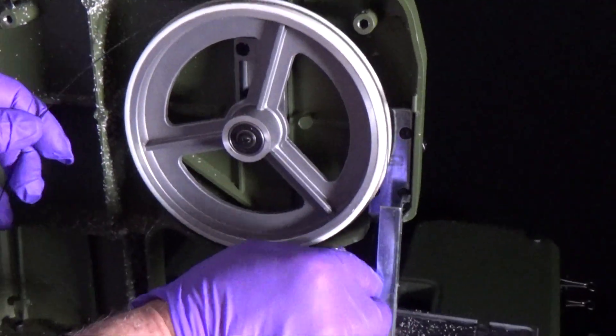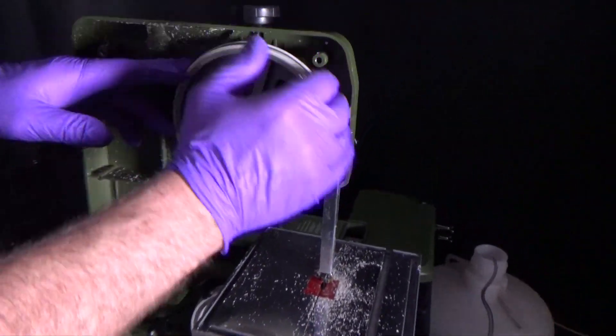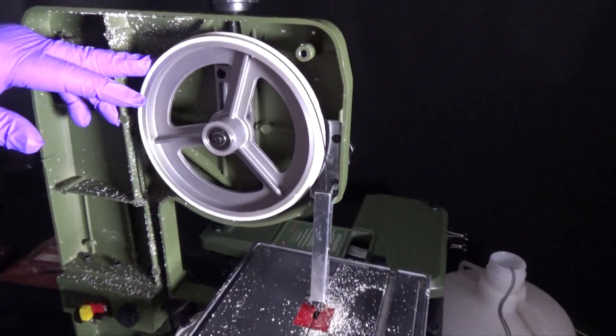To insert a new blade, wrap the blade around the upper and bottom wheel and make sure the blade is inserted properly. Tighten the knob in the back and bring the blade down.